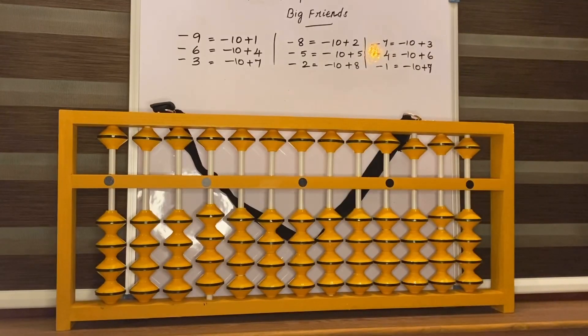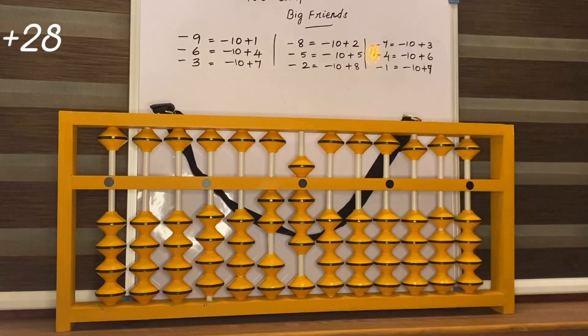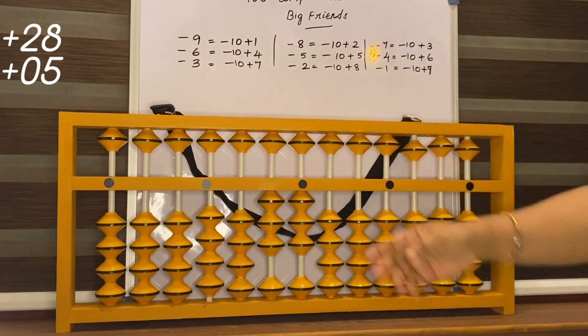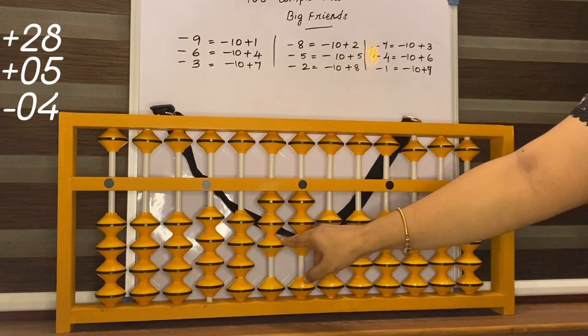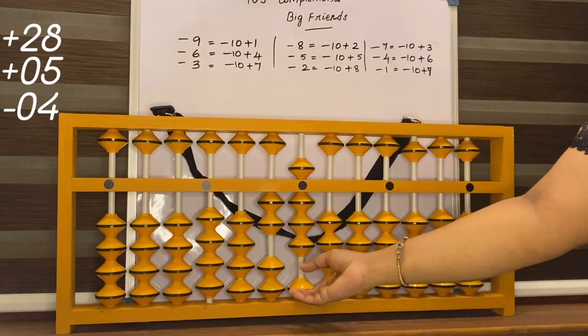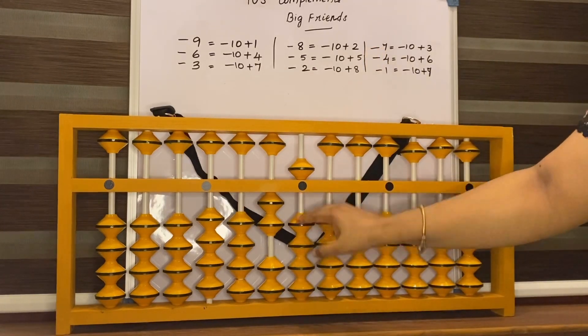Some more examples. Add 10, less 10. 28, 5. Add 10, less 5. Less 4. Less 10, add his friend 6. Now answer is 29.